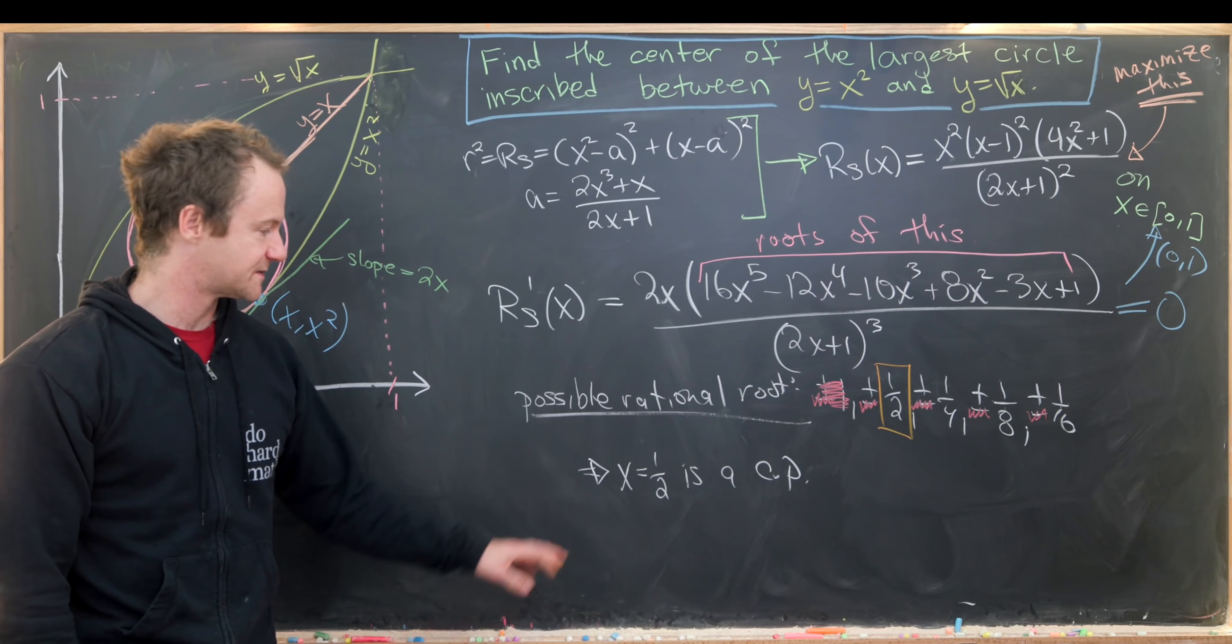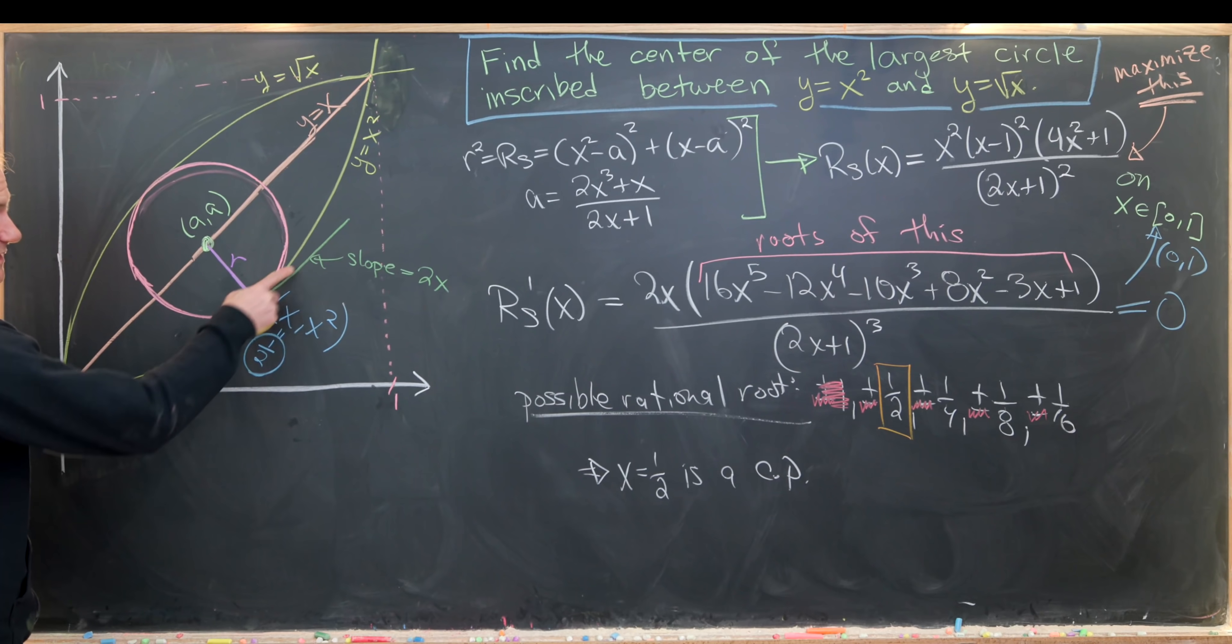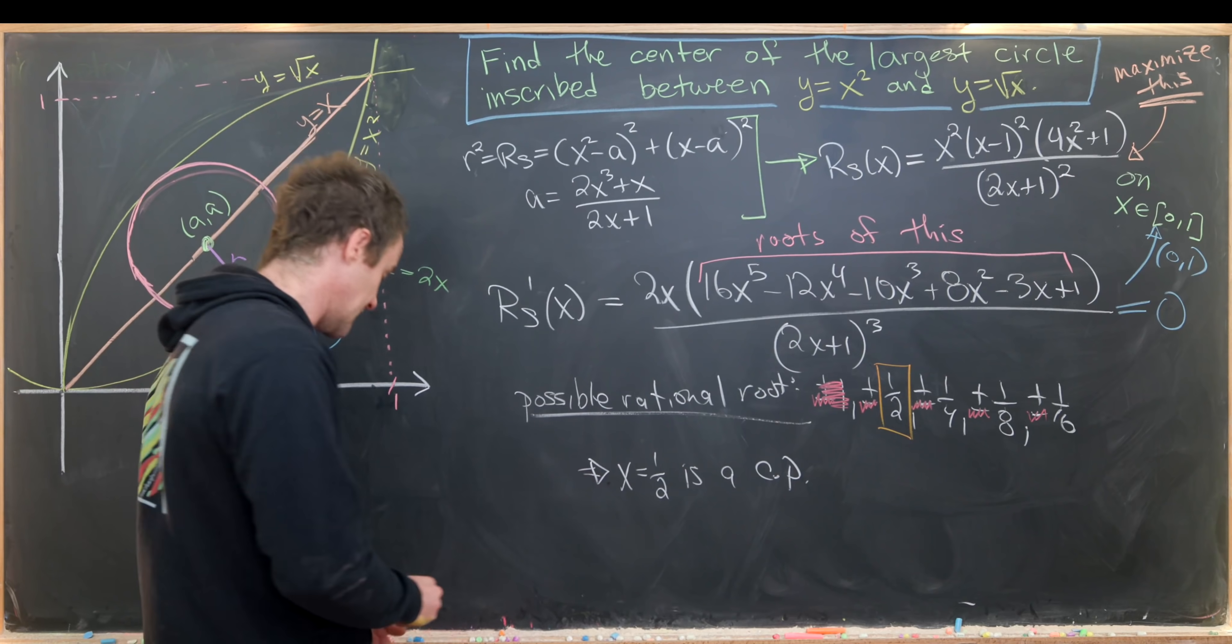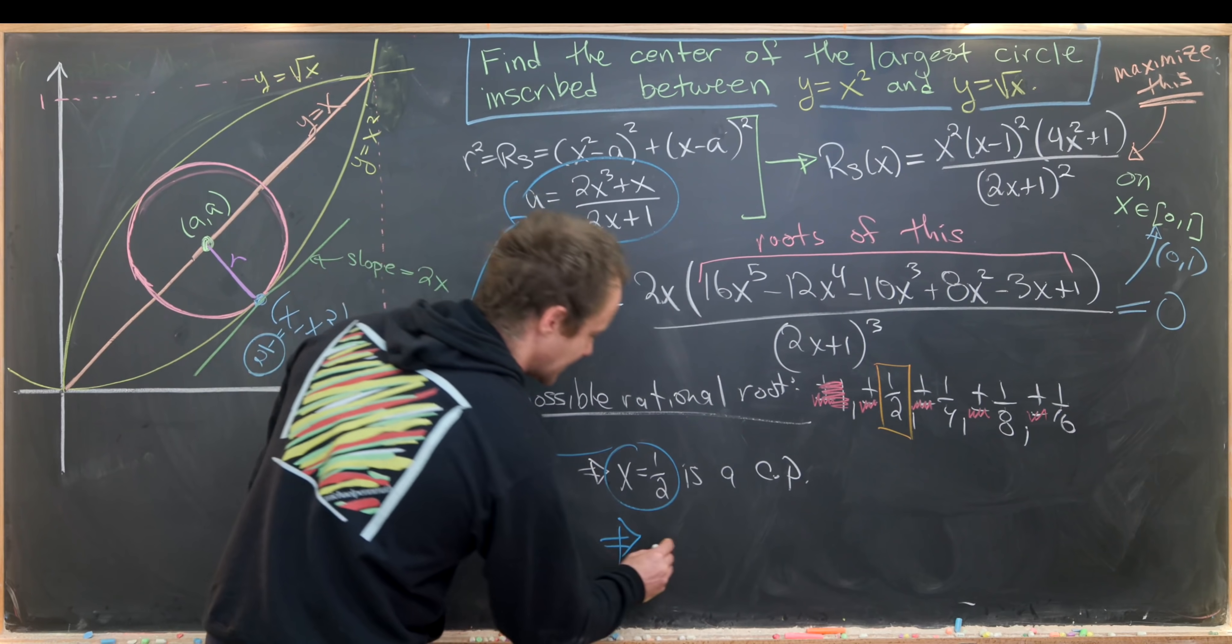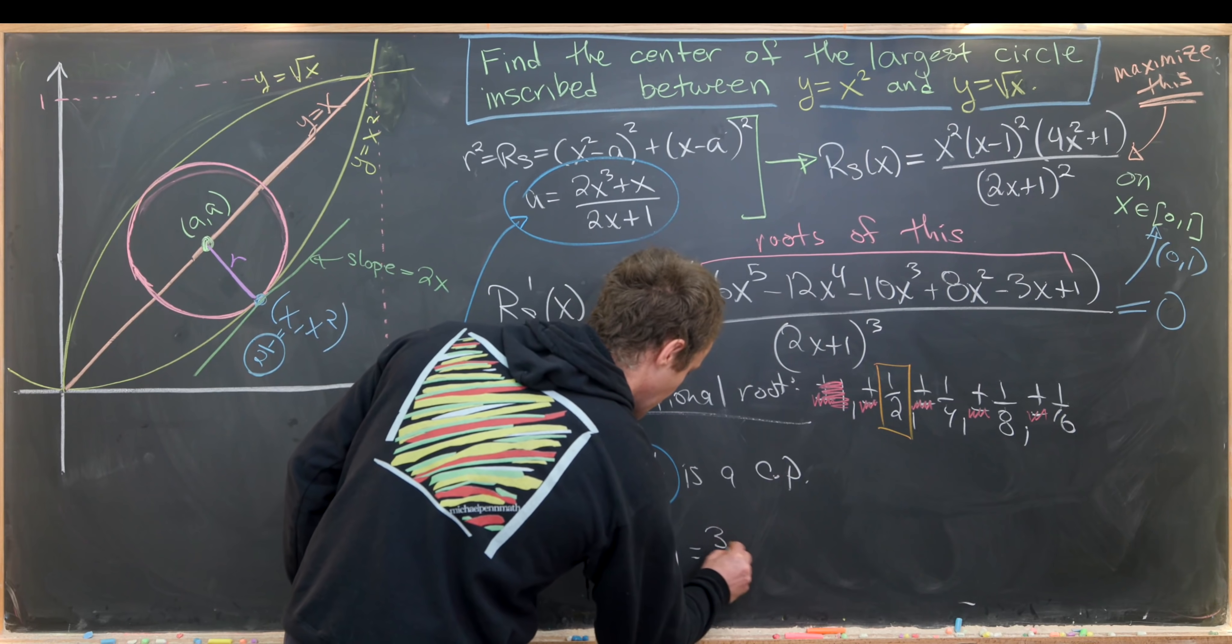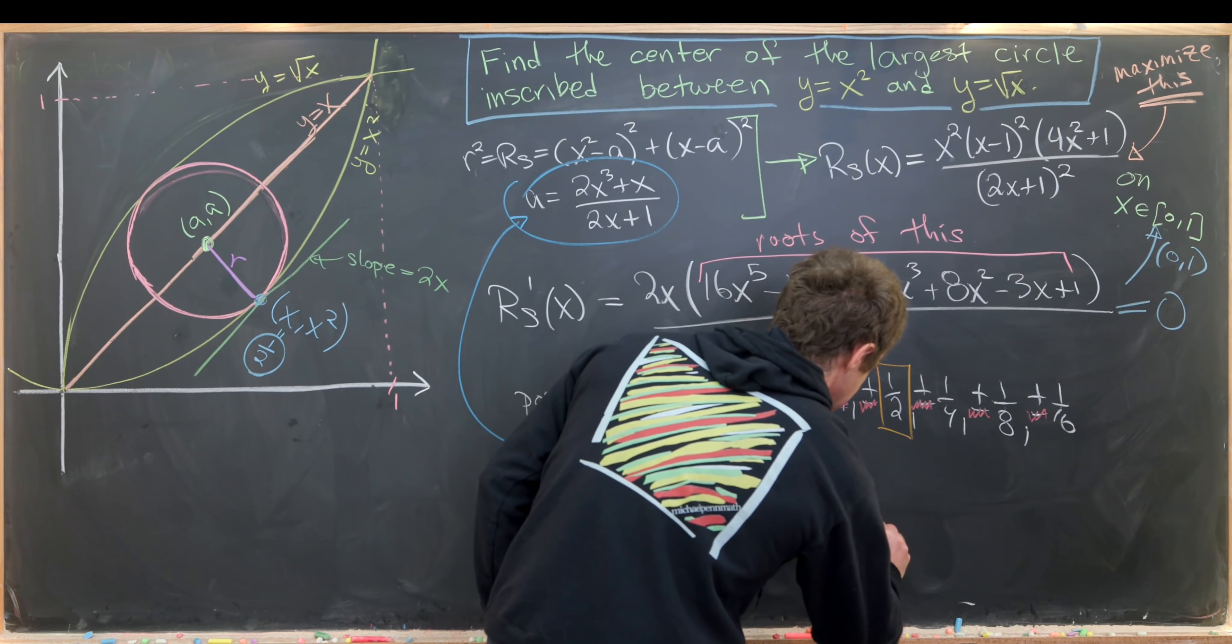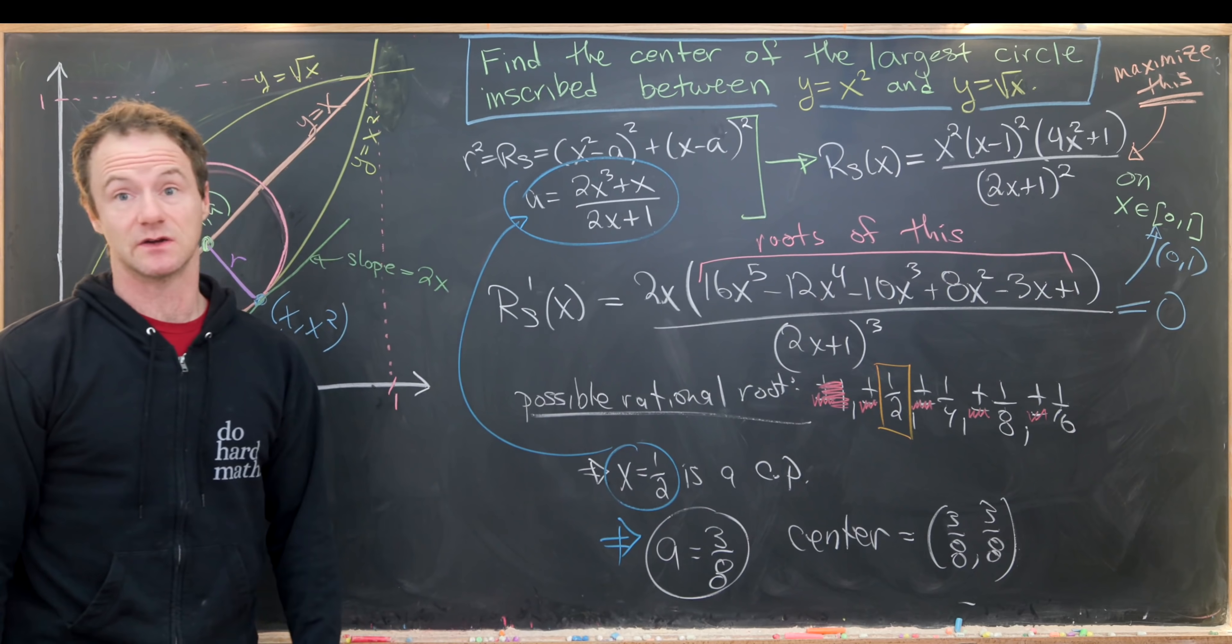Let's see what our actual goal was. Our goal was not to find this x value, which we just achieved. Notice this x value is a point along the circle. Our goal was to find the center of this circle. We can do that by putting this value of x into the expression that relates x with a. That's a pretty easy calculation, and you get a equals 3 eighths. Along with the fact that our center is on the line y equals x, the center is the point 3 eighths, 3 eighths, and that will maximize the radius.